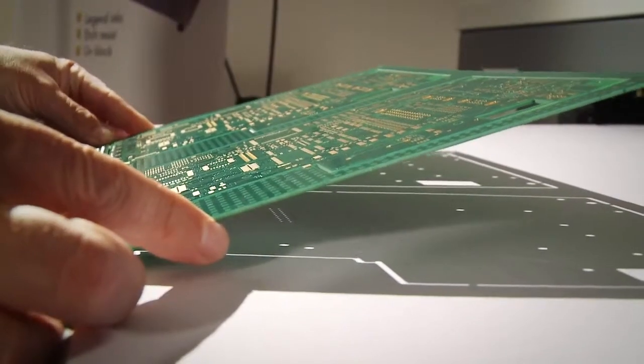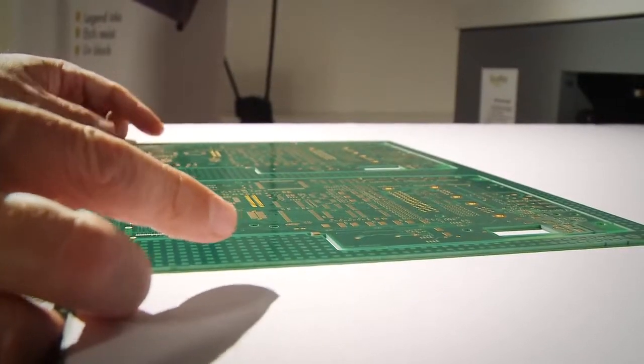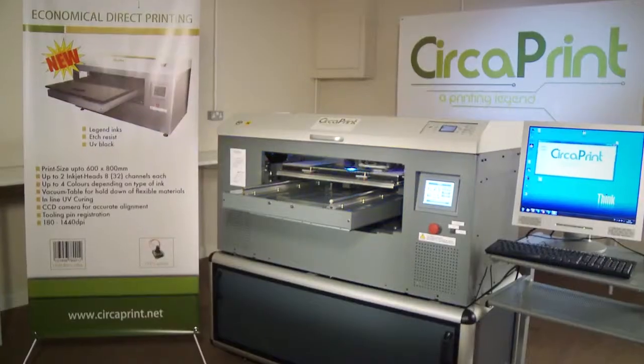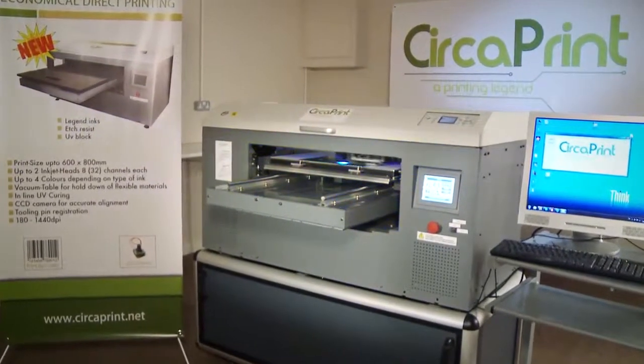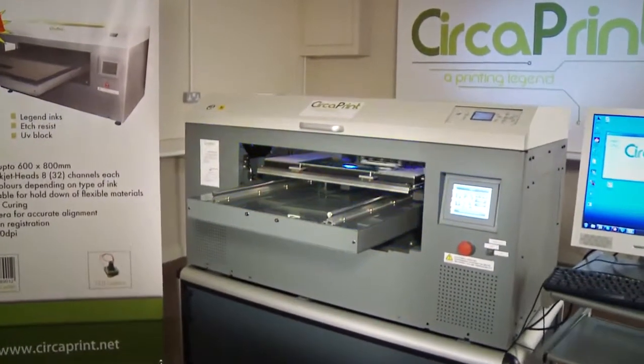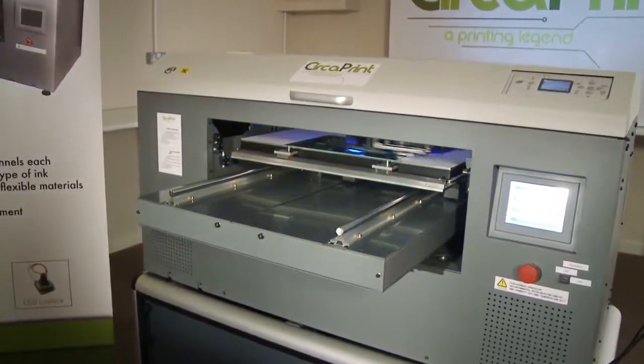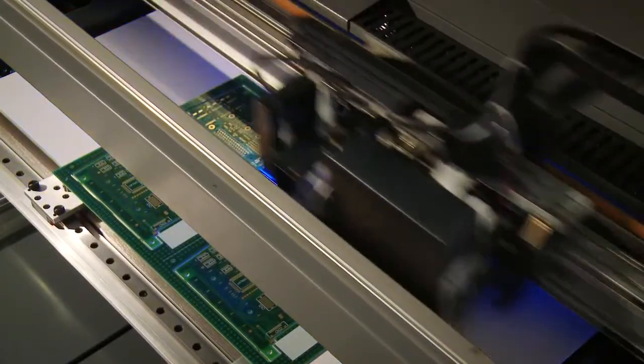Boards are held in place by a vacuum table and are aligned using a built-in CCD camera. The print controller of CircaPrint pilots each piezo element directly, which allows the operator to optimize the ink lay-down in terms of speed and quality.